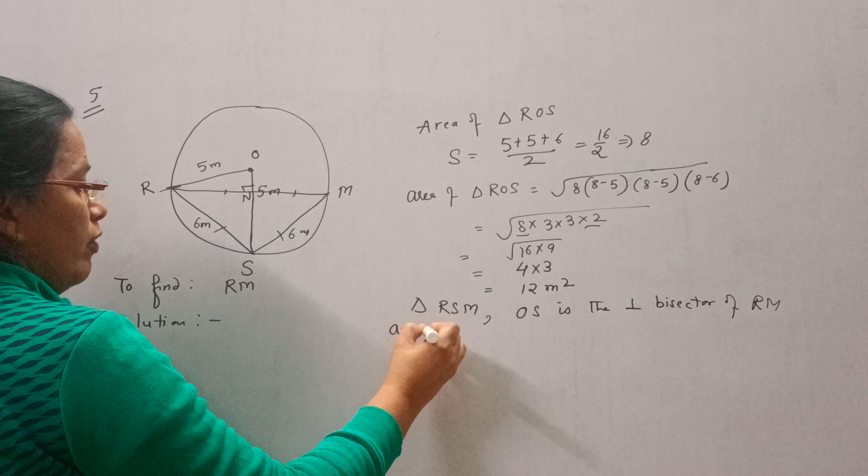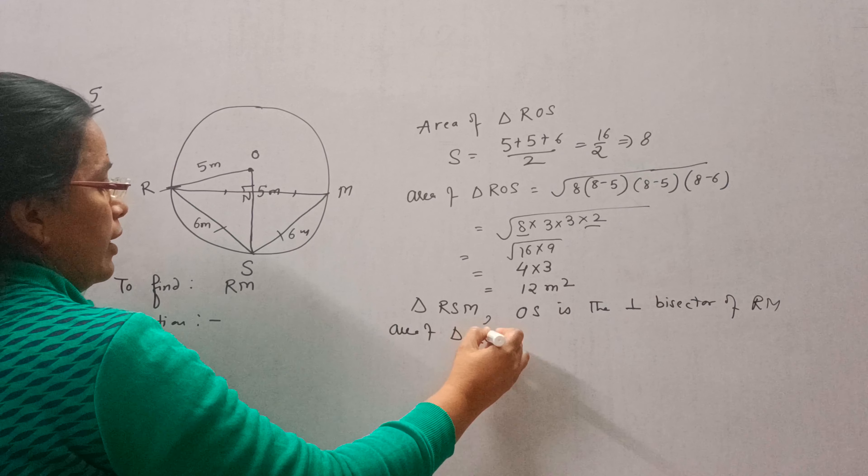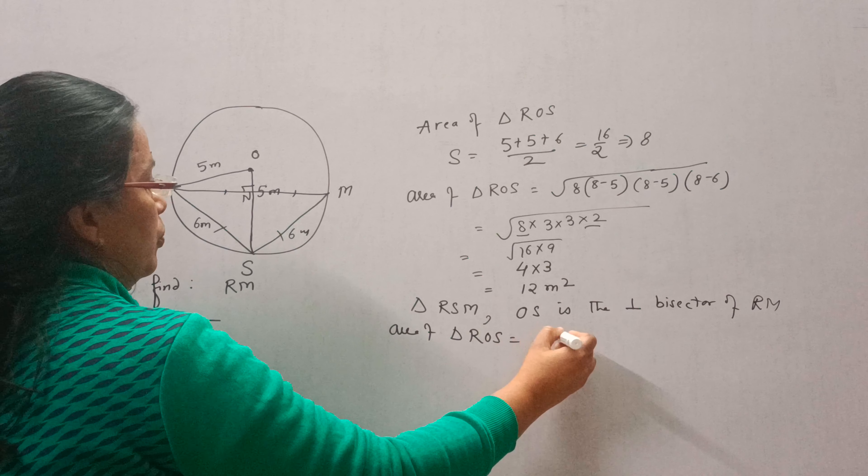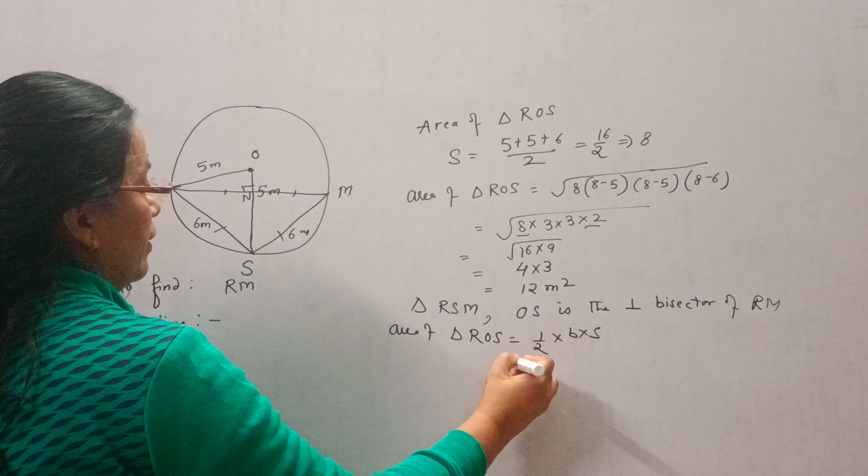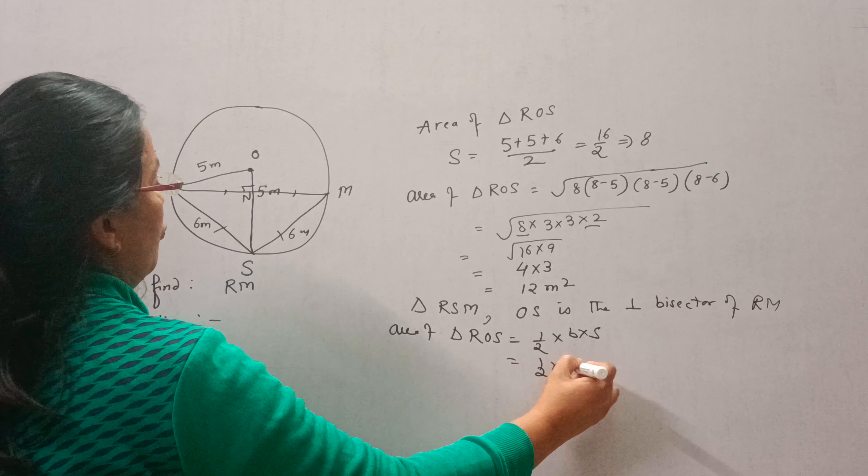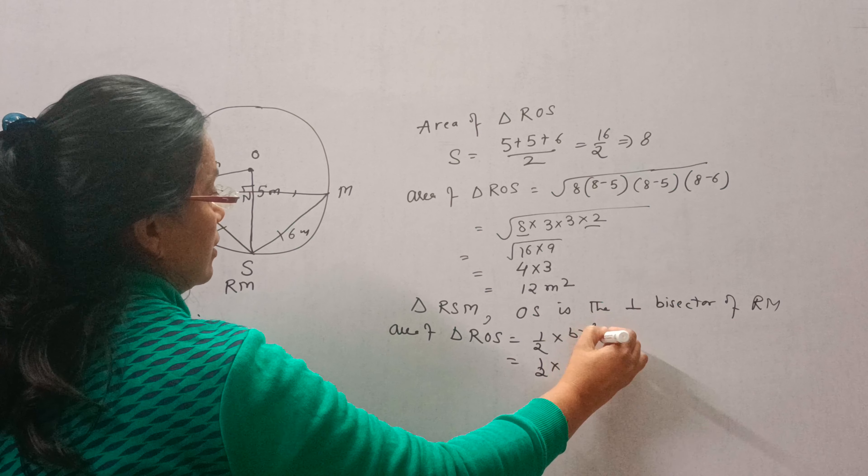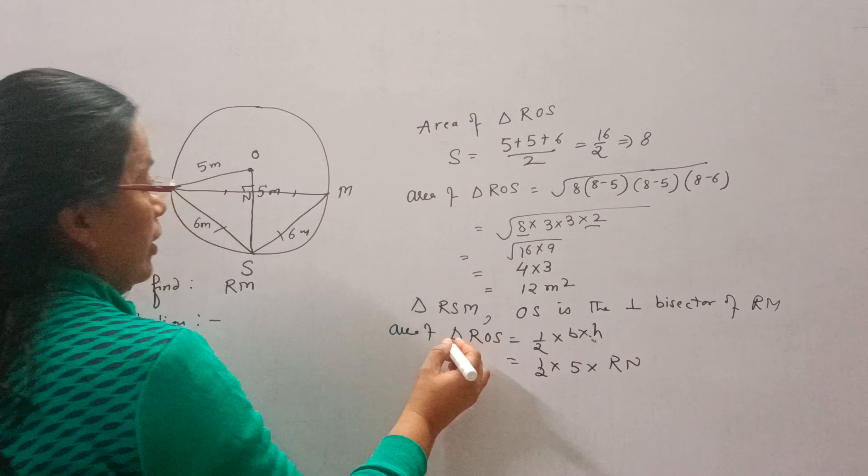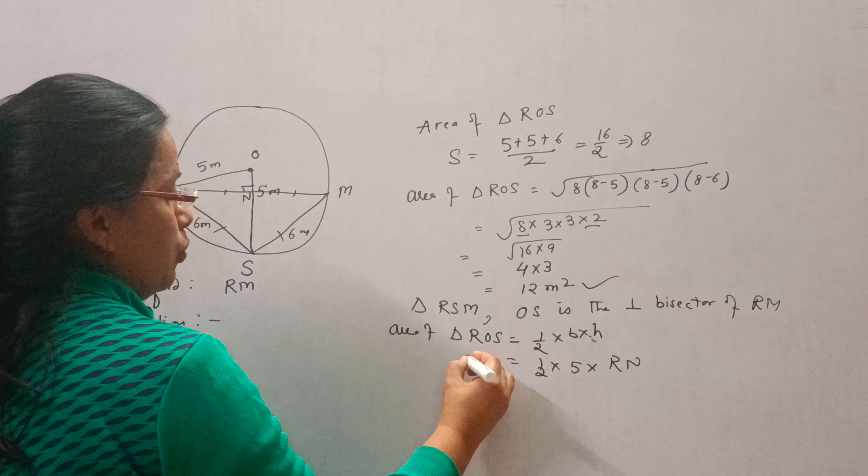Let's find the area of triangle ROS again. 1/2 base times height. Here we have the base and height, and we know the area is 12.